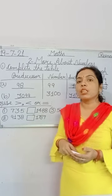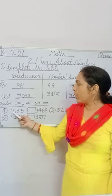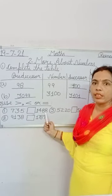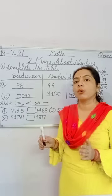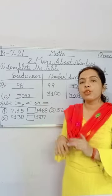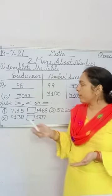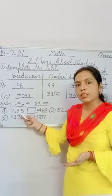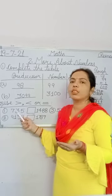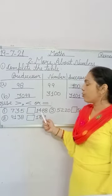For comparison, first we count the number of digits. For example, the left side has three digits and the right side has four digits. Jab bhi hame comparing karni hogi, hum dono side ke digits count karenge. If you have fewer digits, your number is smaller. Since 735 has only three digits and 1488 has four digits, 735 is less than 1488 — put the less than sign.